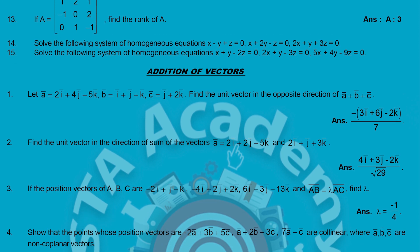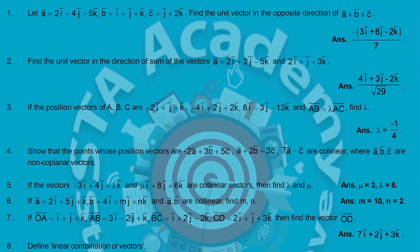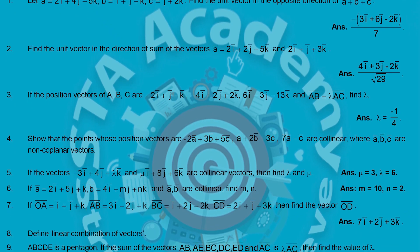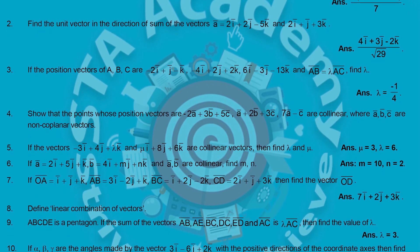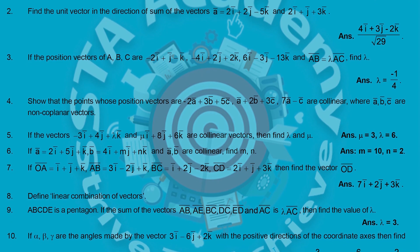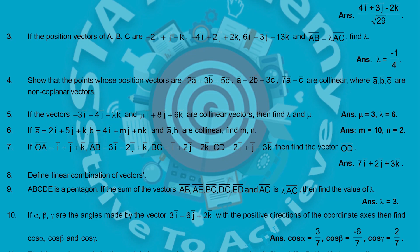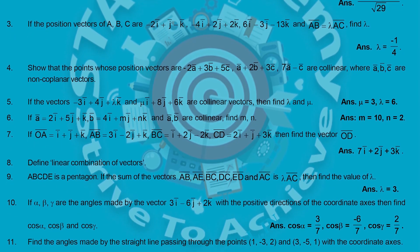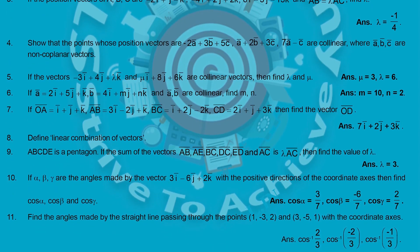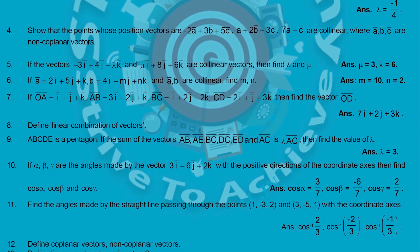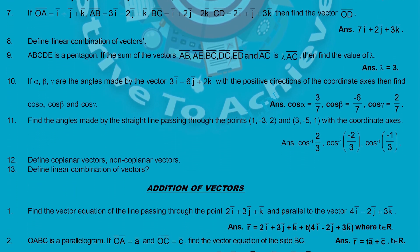For Addition of Vectors I have given 13 VSAQs — very important. For example: vector a = 2i + 4j − 4k, vector b = i + j + k, vector c = j + 2k — find a unit vector. The unit vector question is very important and most commonly asked in IPE. Sometimes they will give you two vectors to find the value of λ and μ. Also important: define coplanar vectors, non-coplanar vectors, and define linear combination of vectors.